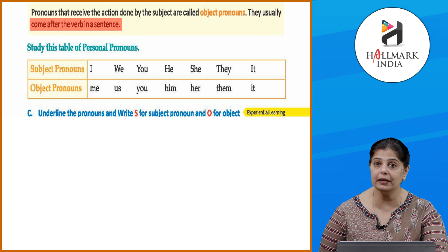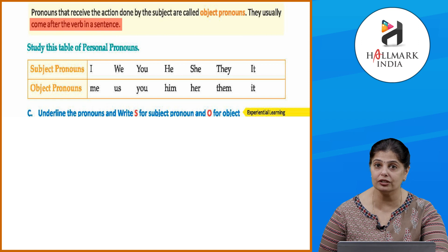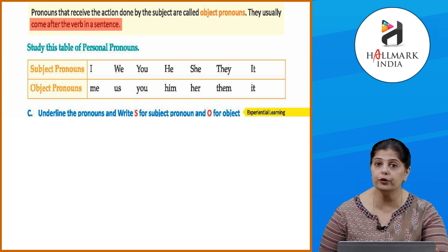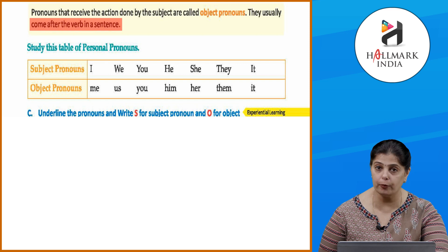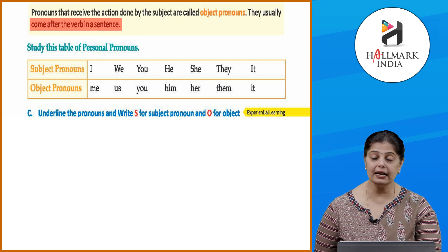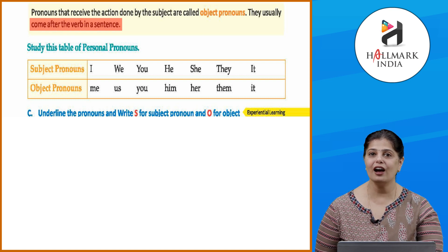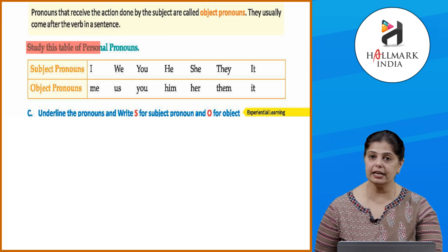For example, 'the teacher assigned us a project' — 'assigned' is the action and 'us' is the object. 'I can help you' — 'I' is the subject, 'help' is the action, and 'you' is the object. Pronouns that receive the action done by the subject are called object pronouns; they usually come after the verb in a sentence.